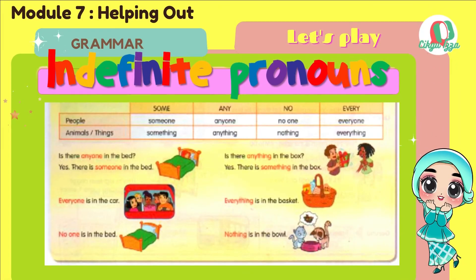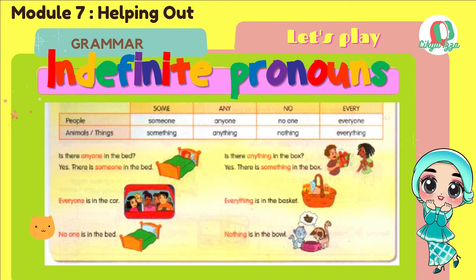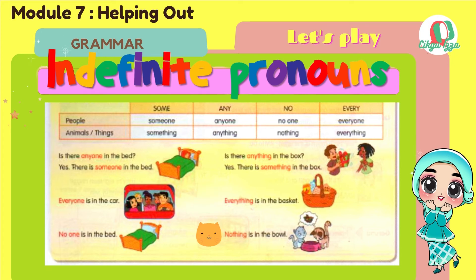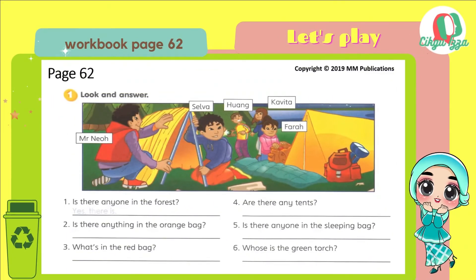Look at the table. You have learned about indefinite pronouns. Here are more examples. Is there anyone in the back? Yes, there is someone in the back. Everyone is in the car. No one is in the back. Is there anything in the box? Yes, there is something in the box. Everything is in the basket. Nothing is in the bowl. Please open your workbook, page 62. Look at the picture and please answer all the questions.